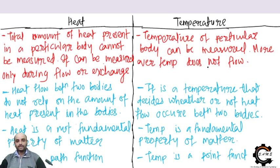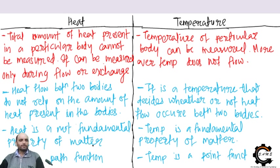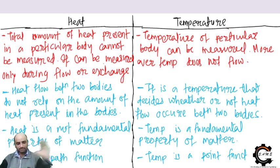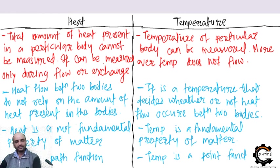Heat flow between two bodies does not rely on the amount of heat present in the bodies — it is temperature that decides whether or not heat transfer occurs. Heat is not a fundamental property of matter because it is in flow, whereas temperature is a fundamental property of matter because we measure it at a point. Heat is a path function; temperature is a point function.